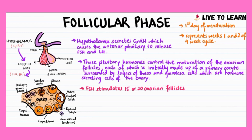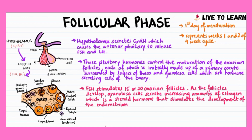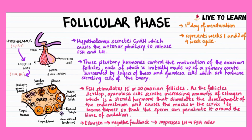FSH stimulates 15 to 20 ovarian follicles, which compete and only one emerges as the mature or Graafian follicle. As the follicles develop, granulosa cells secrete increasing amounts of estrogen, which is a steroid hormone that stimulates the development of the endometrium and causes the mucus in the cervix to become thinner, so that the sperm can penetrate it around the time of ovulation. Estrogen has a negative feedback on the anterior pituitary and hypothalamus, and it suppresses the release of LH and FSH.